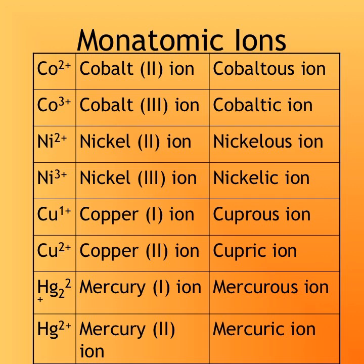Co²⁺ is cobalt 2 ion or cobaltous. Co³⁺ is cobalt 3 ion or cobaltic. Ni²⁺ is nickel 2 ion or nickelous. Ni³⁺ is nickel 3 ion or nickelic. Cu⁺ is copper 1 ion or cuprous. Cu²⁺ is copper 2 ion or cupric. Mercury is unusual — Hg₂²⁺ is called mercury 1 or mercurous, while Hg²⁺ with no subscript is called mercury 2 or mercuric.